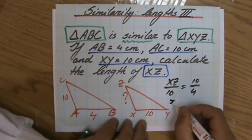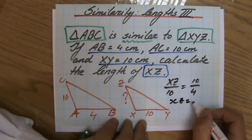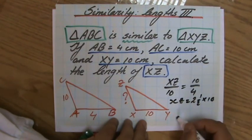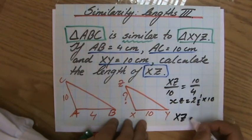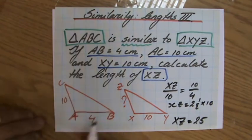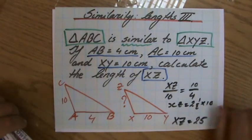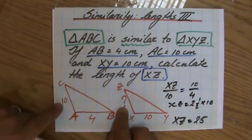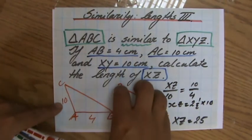So XZ, I don't have a lot of space, 10 divided by 4 is 2 and a half times 10. So XZ equals 25 units. Because the unit's not given, so you can say 25 units. Does that make sense? Yes, it should be bigger than 10, because this is the bigger triangle.